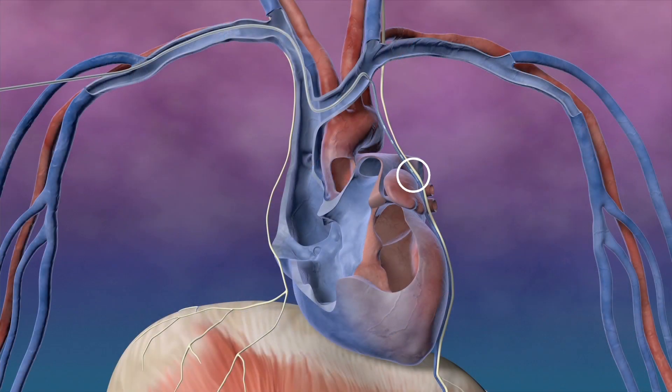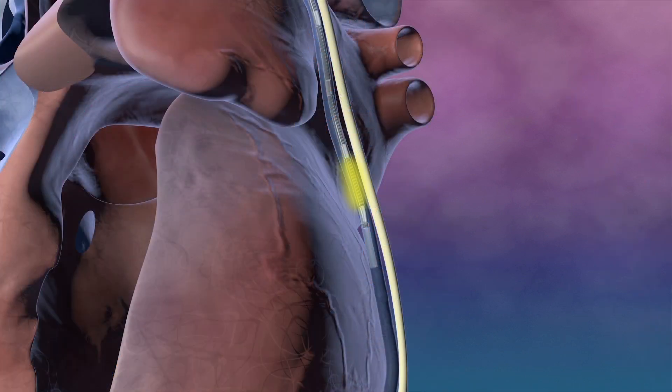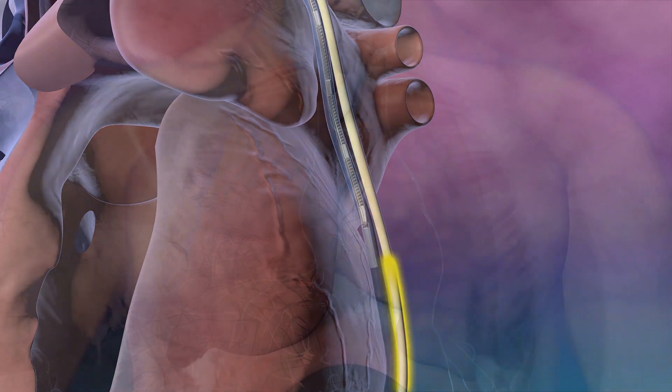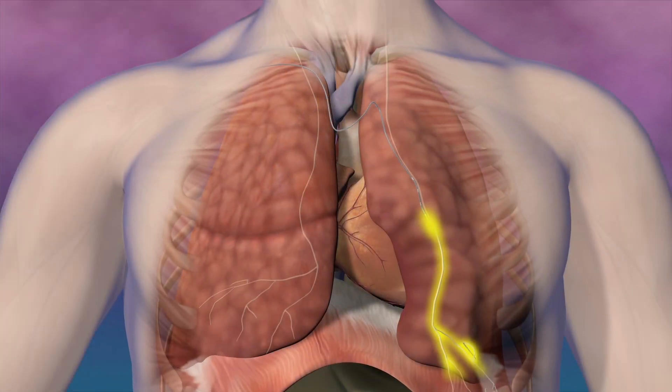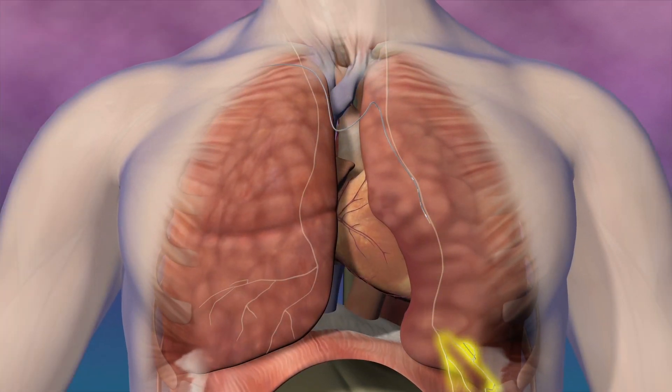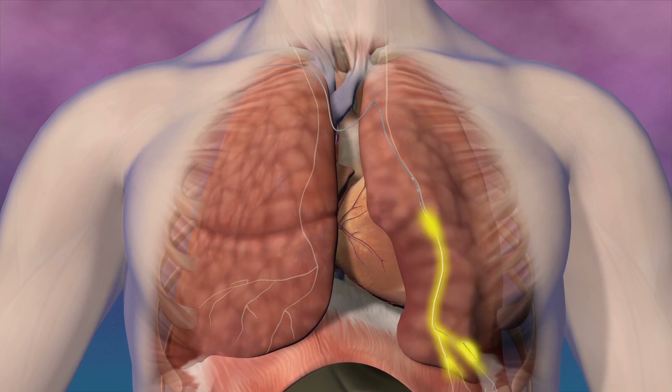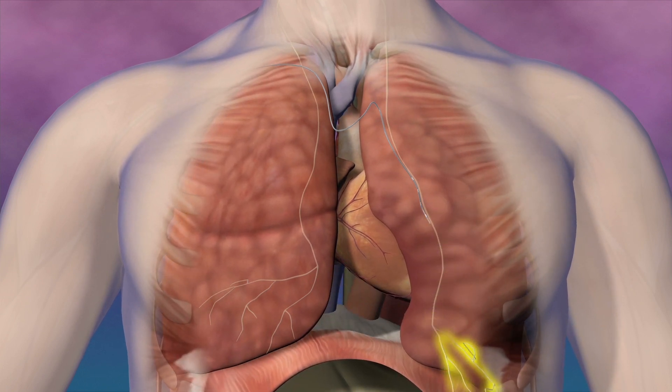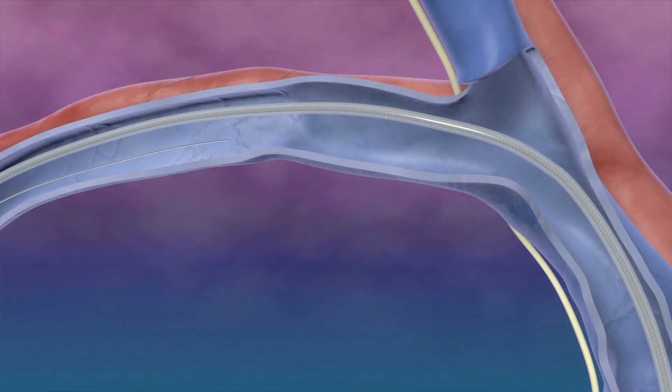The electrodes are now situated adjacent to the left phrenic nerve. This location is confirmed with electrical testing by observing a smooth, strong contraction using fluoroscopy. The guide wire and guide catheter are left in place to maintain lead placement during the rest of the implant procedure.